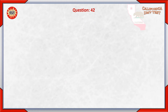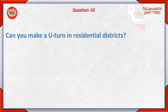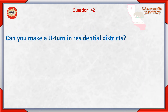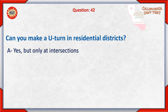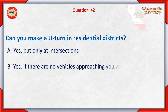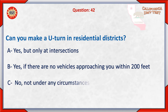Question 42. Can you make a U-turn in residential districts? A. Yes, but only at intersections. B. Yes, if there are no vehicles approaching you within 200 feet. C. No, not under any circumstances.